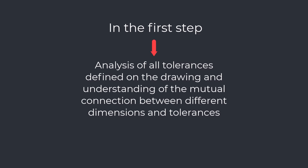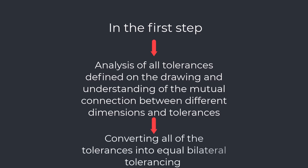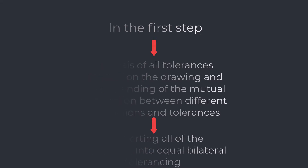For example, if we have an assembly, we will investigate the assembly procedure and the relationship between the different parts. After correctly understanding the various connections between the parts, we will select the distance, gap, or interference we want to analyze. The next thing we will do is prepare the tolerances in a format usable in tolerance stack-up analysis, converting all tolerances into equal bilateral tolerancing.